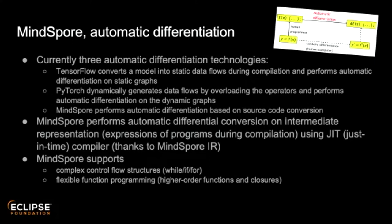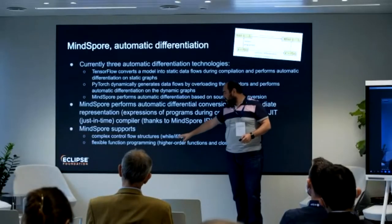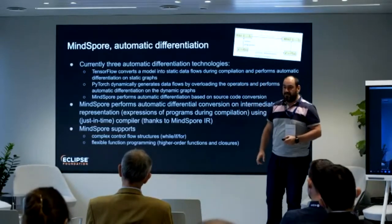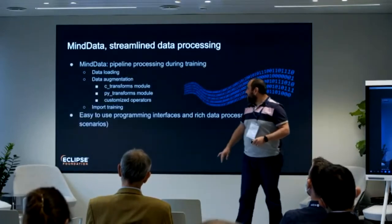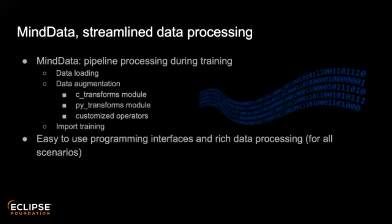You also have direct access in your code to flow controls like while, if, and for, to interact with the automatic differentiation patterns. Another interesting feature is pipeline processing during training — a streaming pipeline. Most frameworks require you to load the data and then execute training separately. Here, you can load data and train the model at the same time, in a streaming fashion.